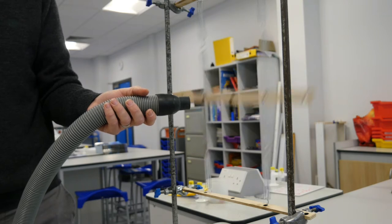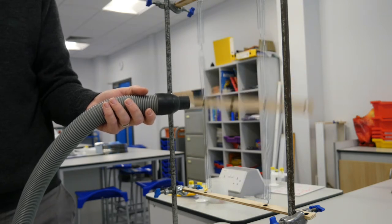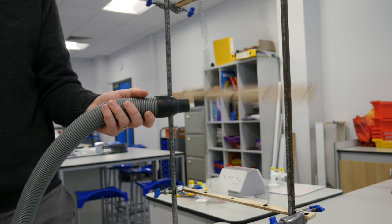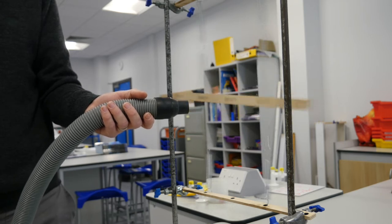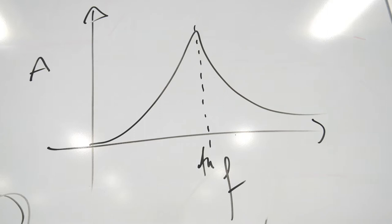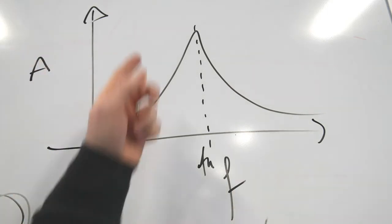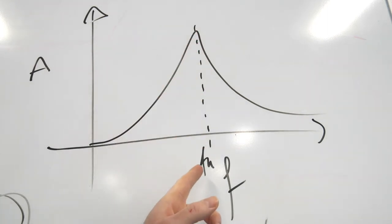Notice we've changed the stiffness here, so we've therefore changed the natural frequency. So this graph is just if you increase the frequency, you'll get these different amplitudes and you'll get this sharp peak at the natural frequency.